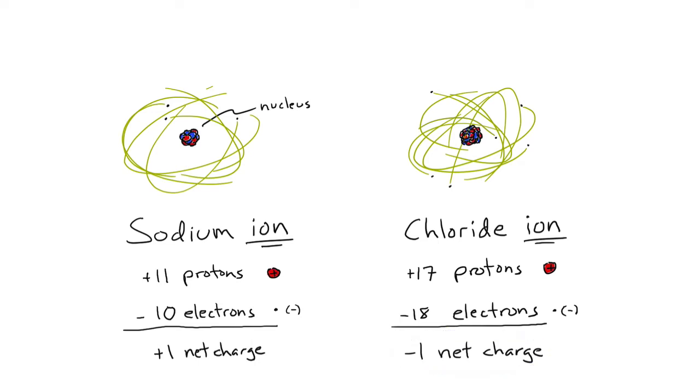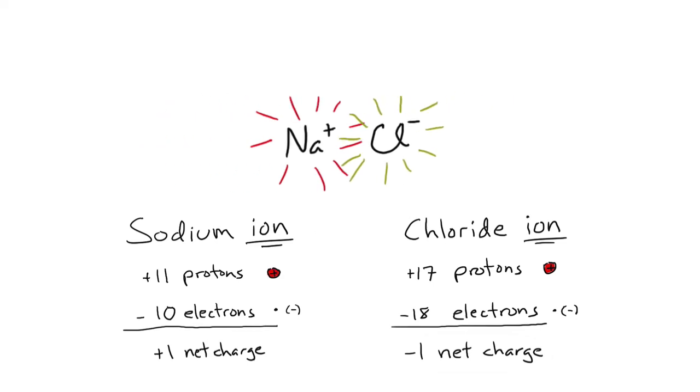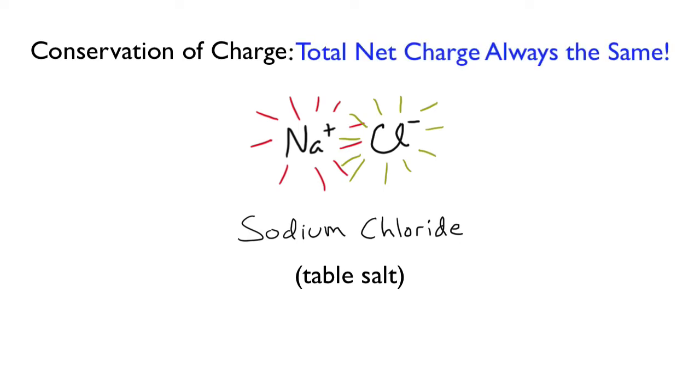From chemistry, we learn that sodium and chloride ions join together to form a material we know as sodium chloride, also known as table salt. Regarding the physics, it's important to point out that upon the formation of sodium chloride, there is a conservation of charge, which means that the total net charge always remains the same.